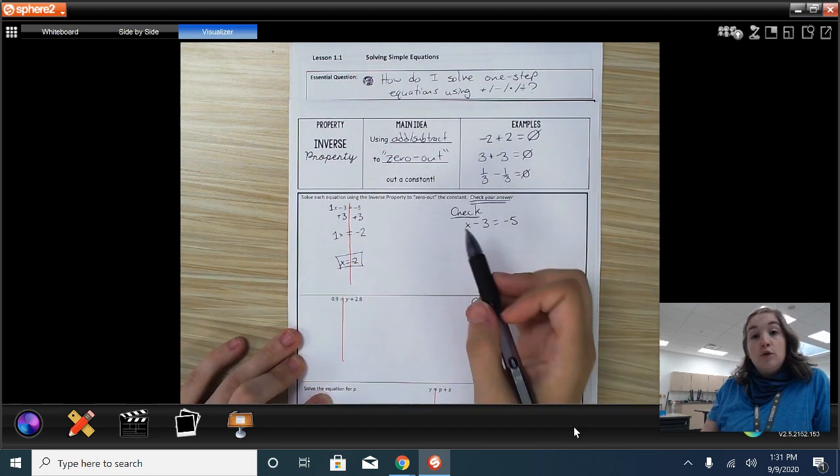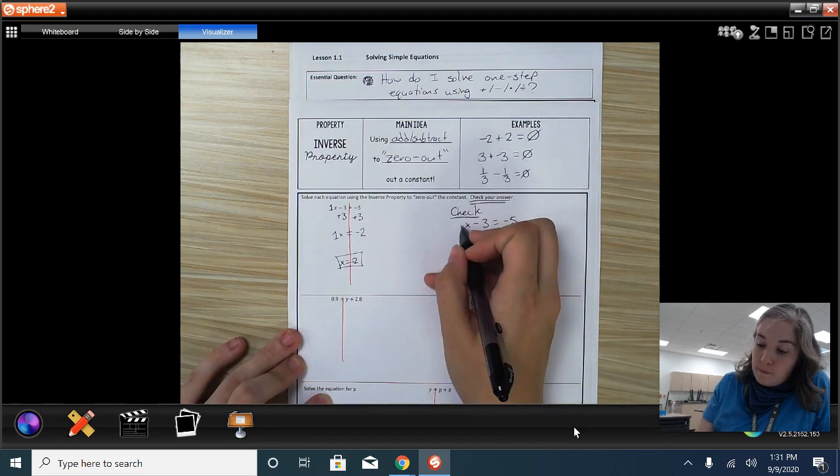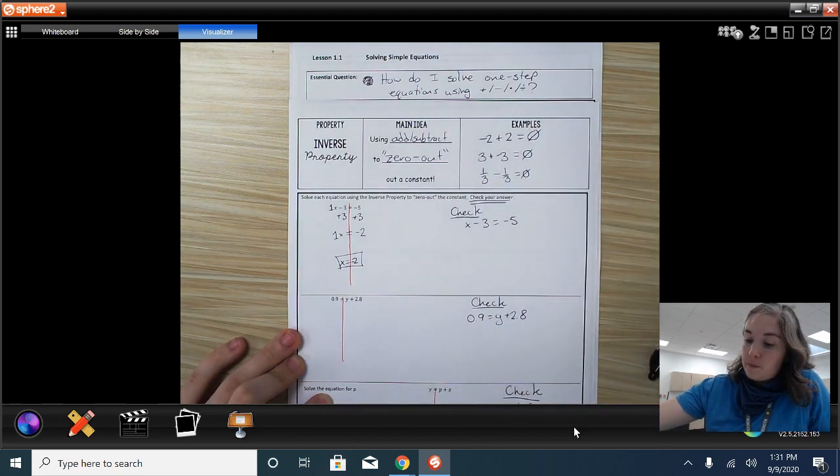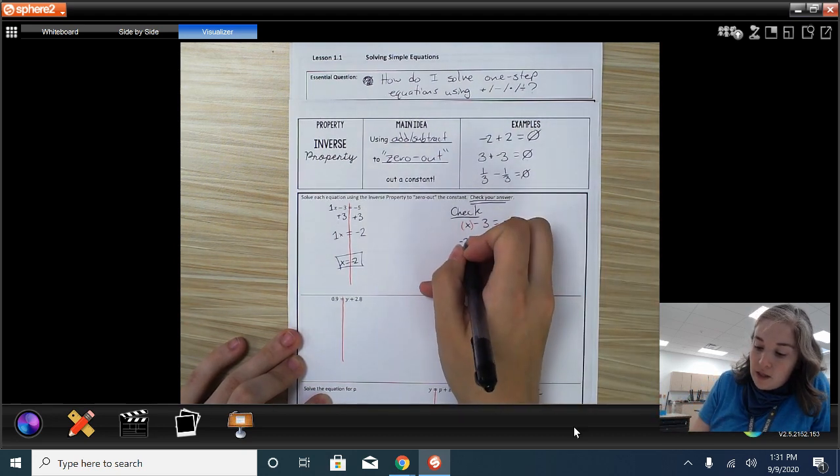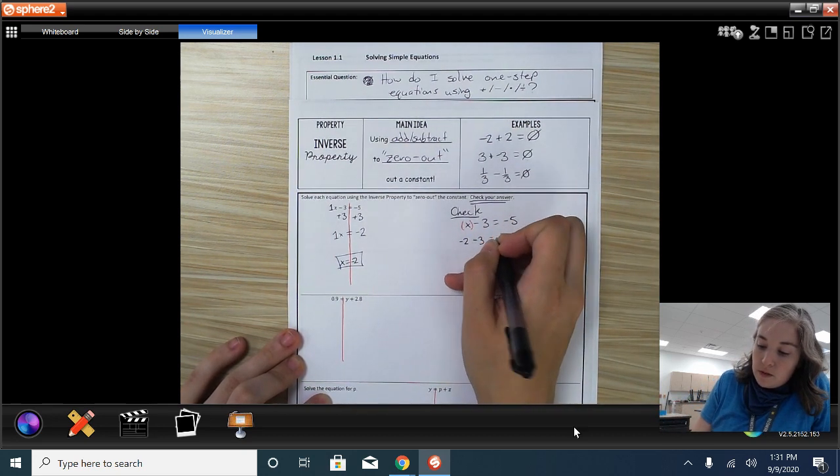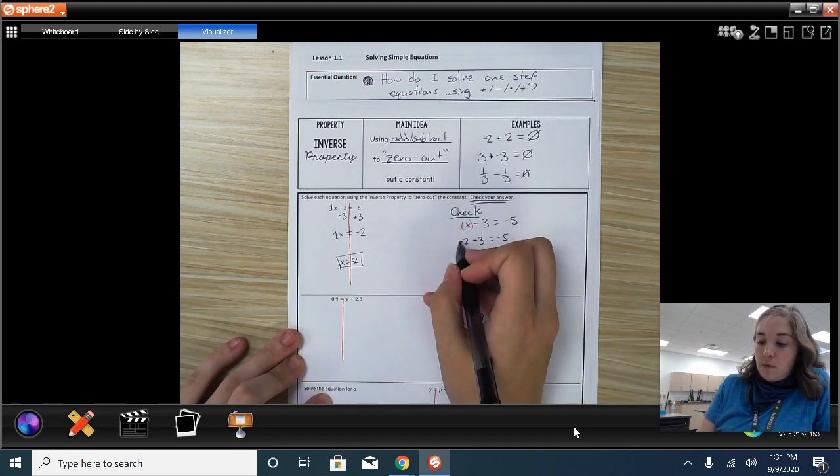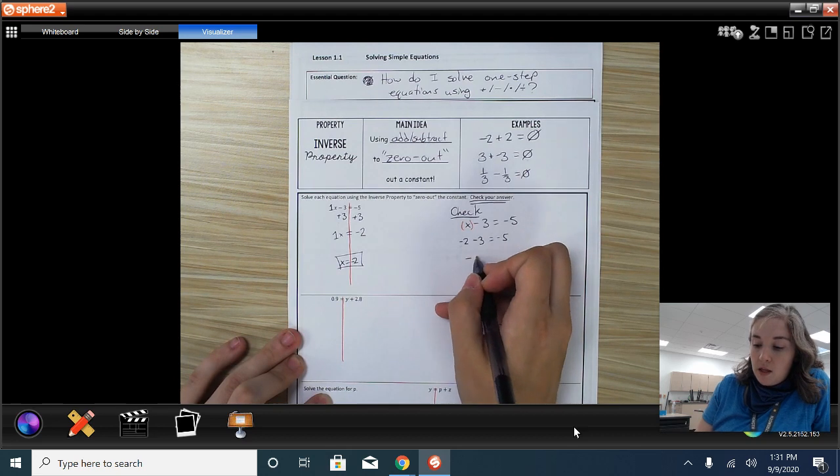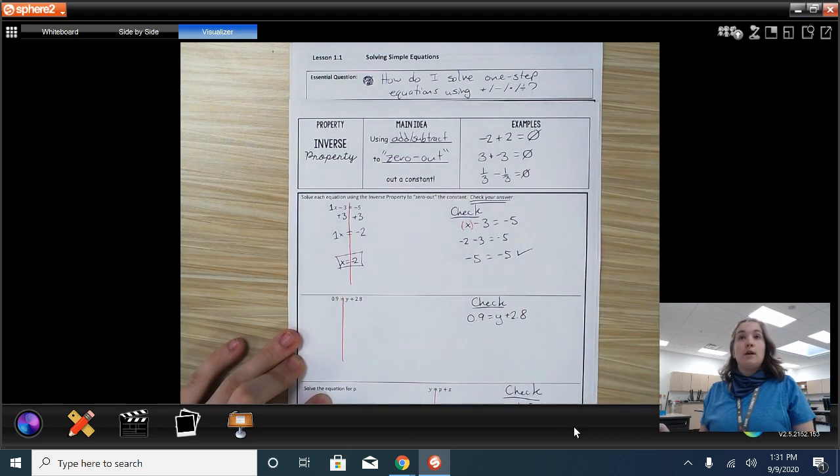To check, I am going to plug in negative 2 where I see x. So I'm going to give x a hug and substitute in negative 2. So then I have to say, well, negative 2 minus 3 equals negative 5. Negative 2 minus 3 is negative 5, and it equals negative 5. Yes, that's true. It checks.